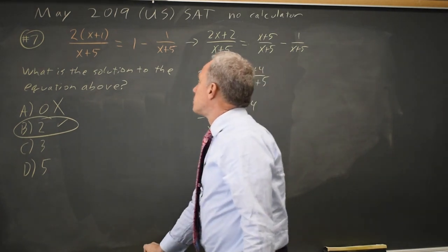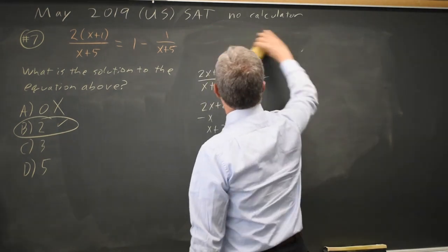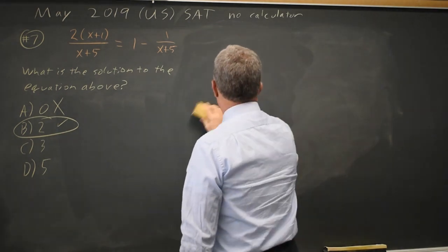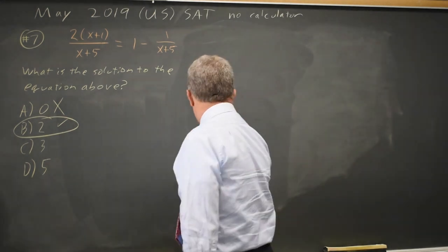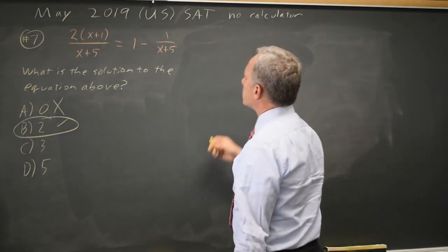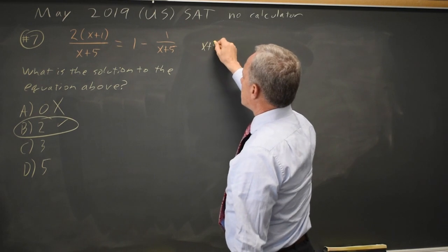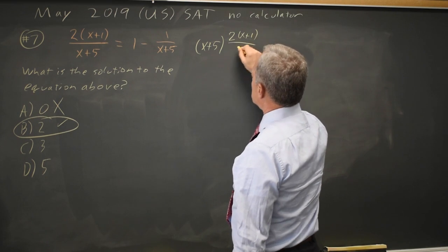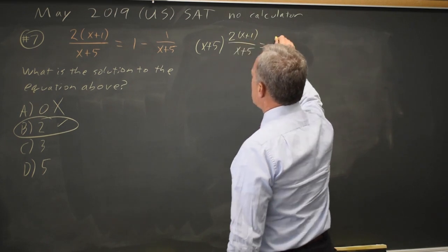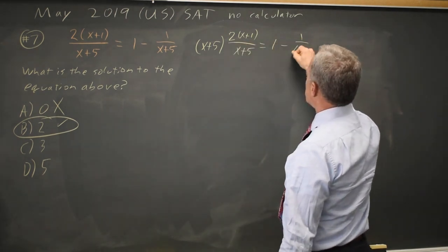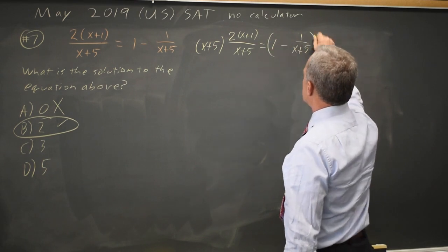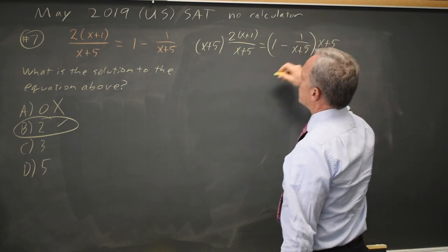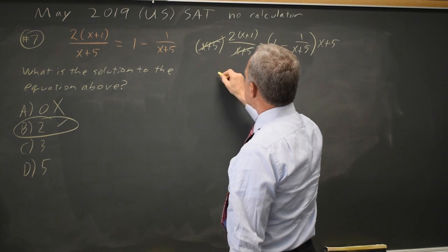As a third approach, I could multiply both sides by x plus 5. So I have x plus 5 times 2x plus 1 over x plus 5 equals 1 minus 1 over x plus 5 times x plus 5. x plus 5 over x plus 5 is 1.